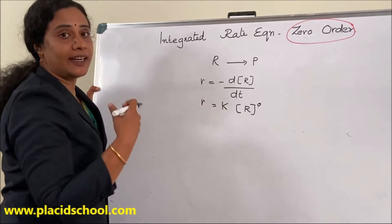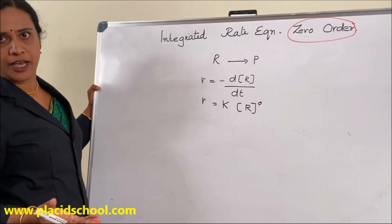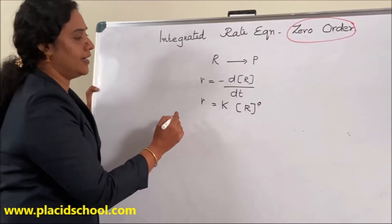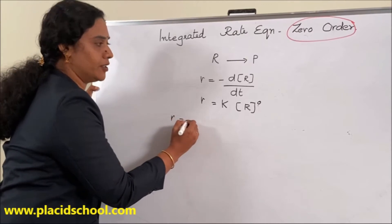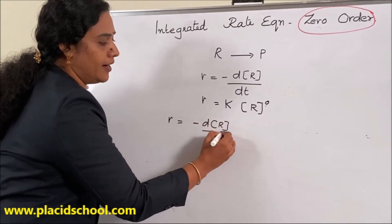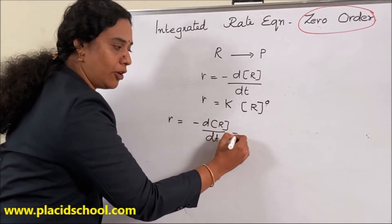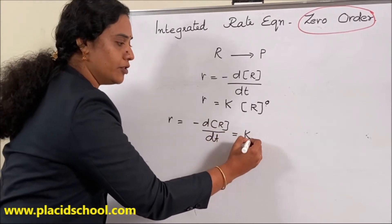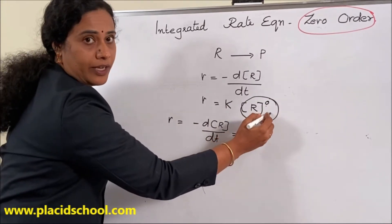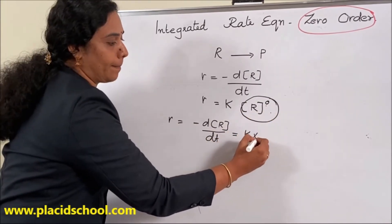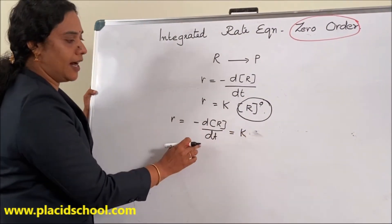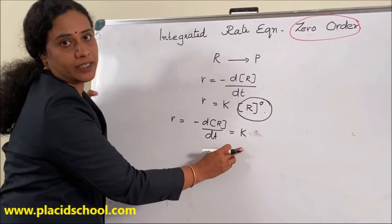These two equations indicate the rate of the same reaction, so we can equate them. That is, minus dR by dt is equal to K into molar concentration of R raised to zero. Since R⁰ equals 1, this simplifies to: minus dR by dt is equal to K.